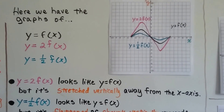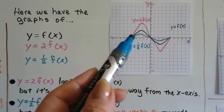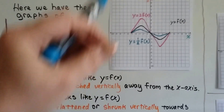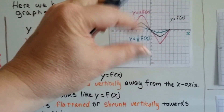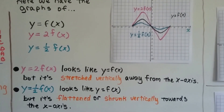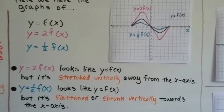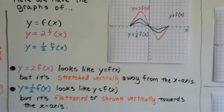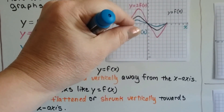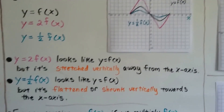y equals 2 times f(x) looks like y equals f(x) — the pink one looks like the black one — but it stretched vertically away from the x-axis. And y equals half times f(x) looks like y equals f(x), except it shrunk vertically — it got squished together towards the x-axis.